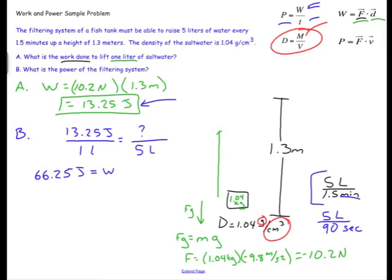So now I'm going to come in and I'm going to use this power equation. So I'm going to say that the power is equal to 66.25 joules divided by 90 seconds. And you see here that I will have a joule per second which is indeed a watt. So I know that my units are working out. So I find that the power of this pump is 0.736 watts.